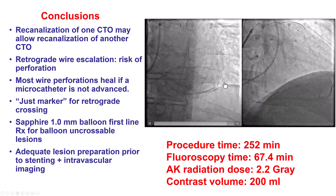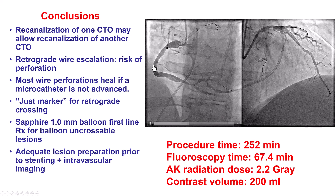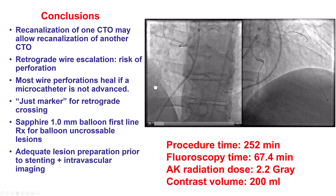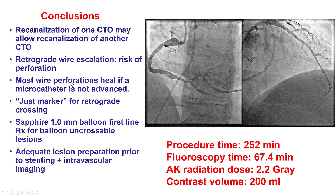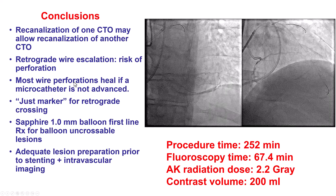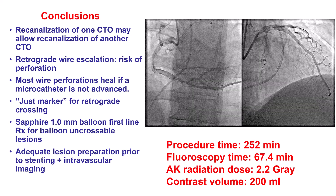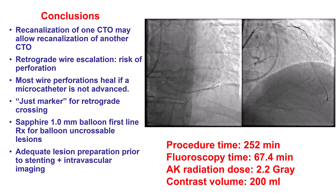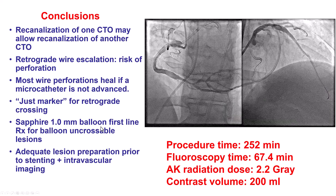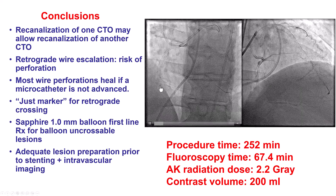Another lesson is that retrograde wire escalation can lead to perforation. We had a blunt distal cap and the wire exited. Fortunately, it was just a wire perforation — we did not advance the microcatheter — and because of that we did not have any significant consequence. We were then able to cross antegrade with no problems.